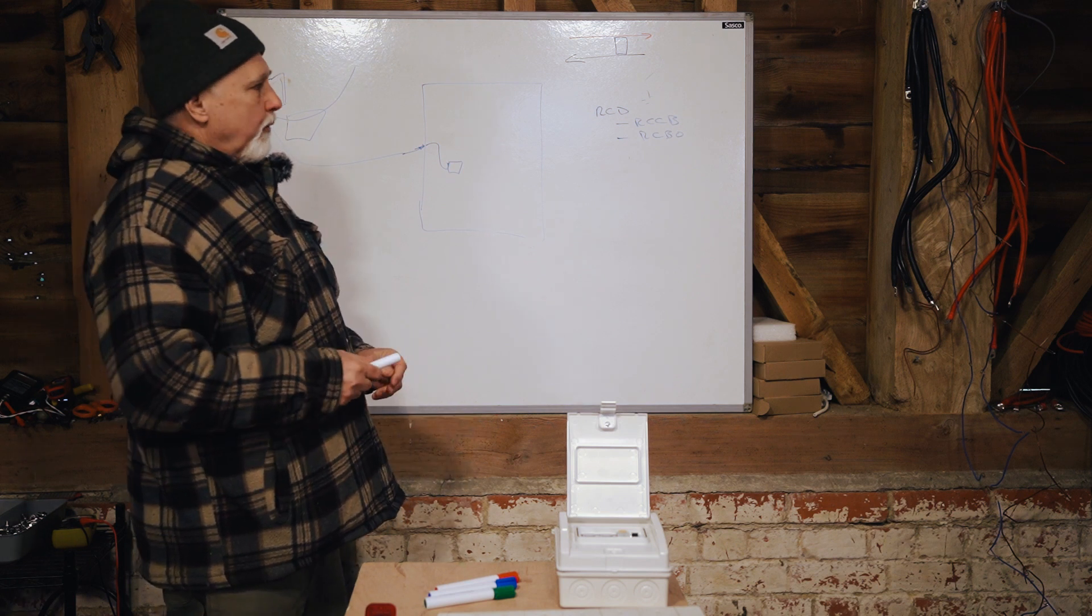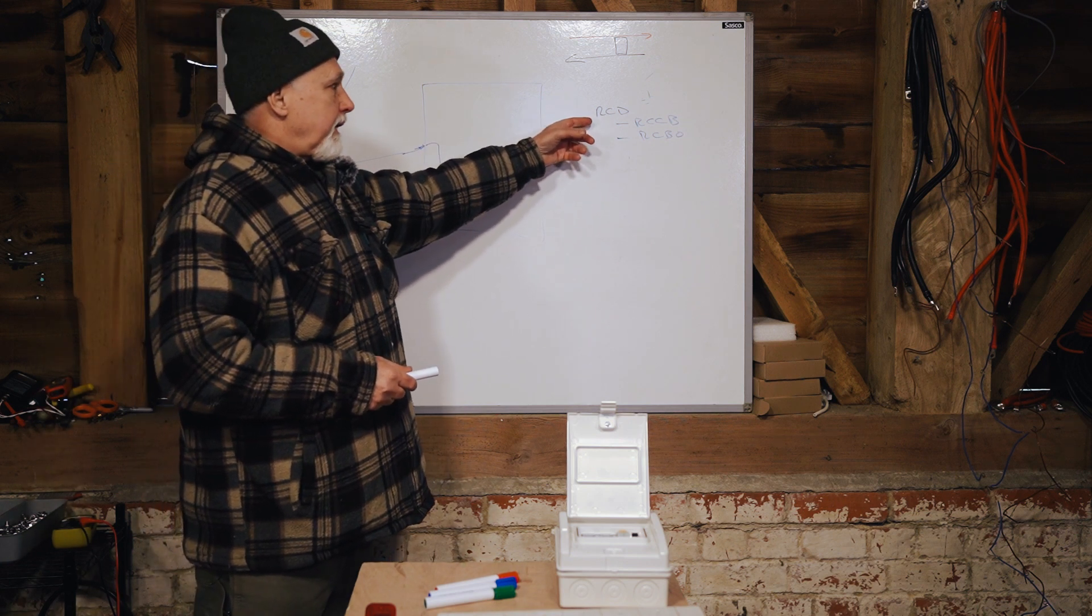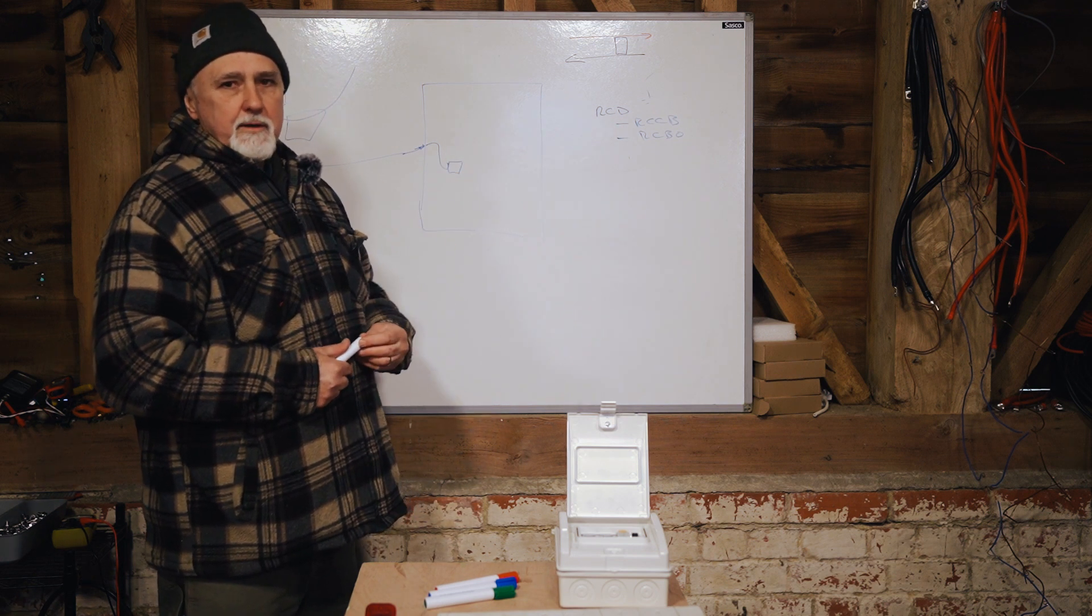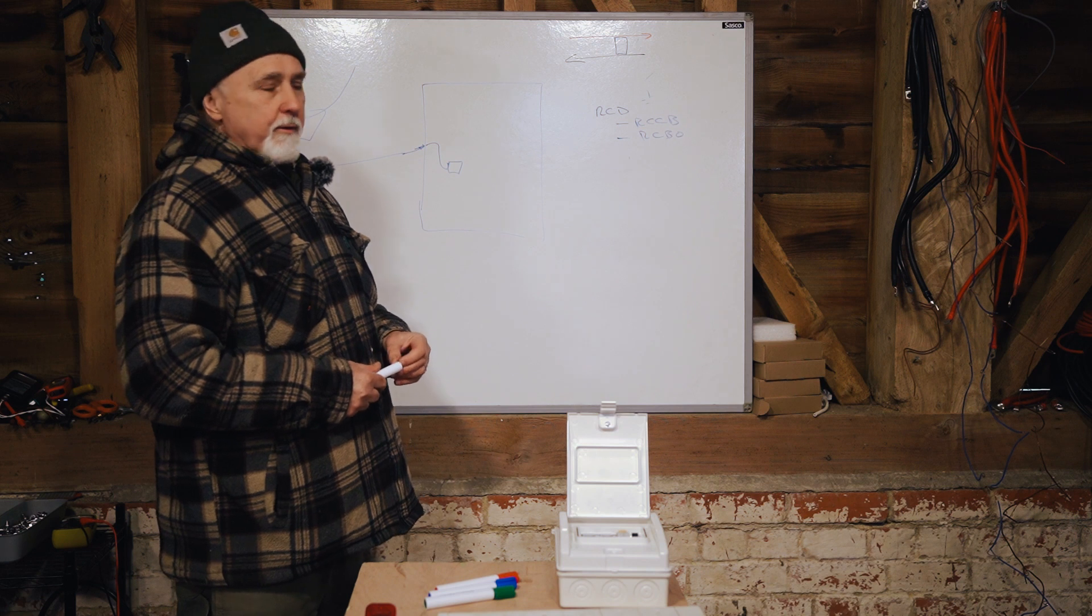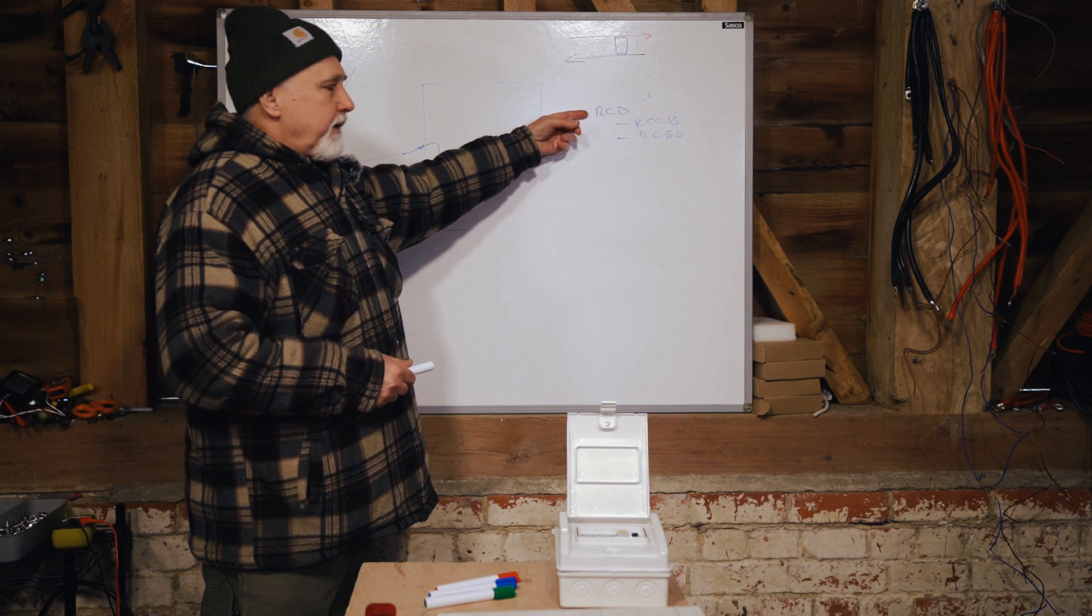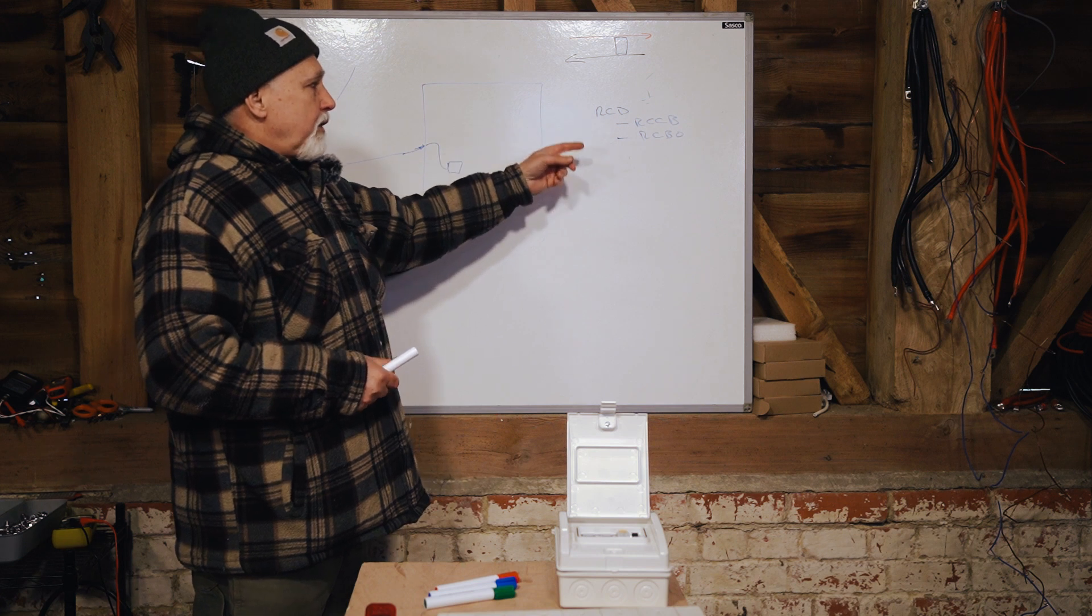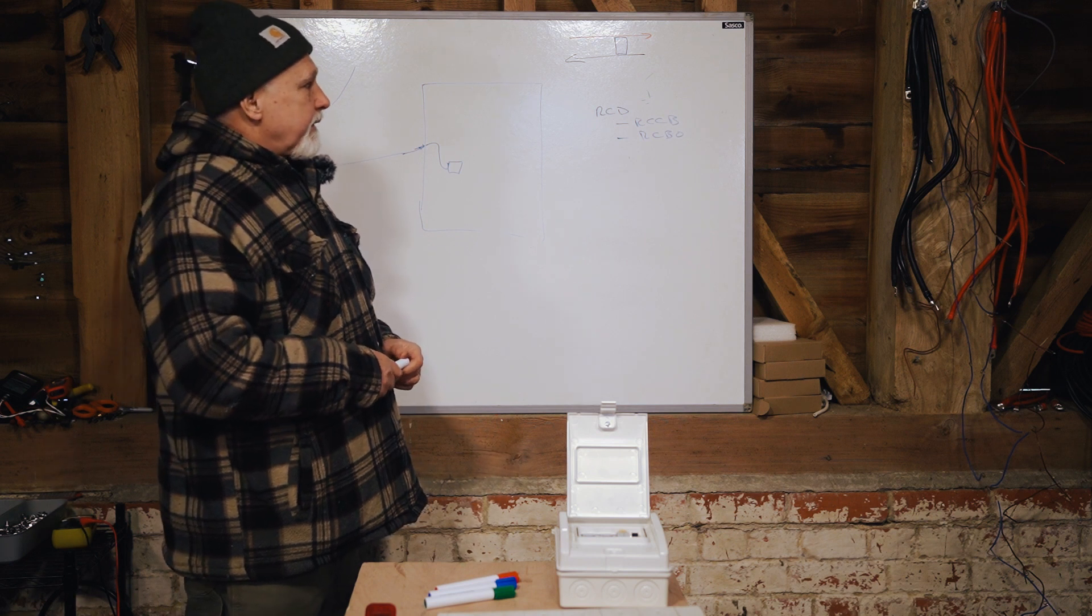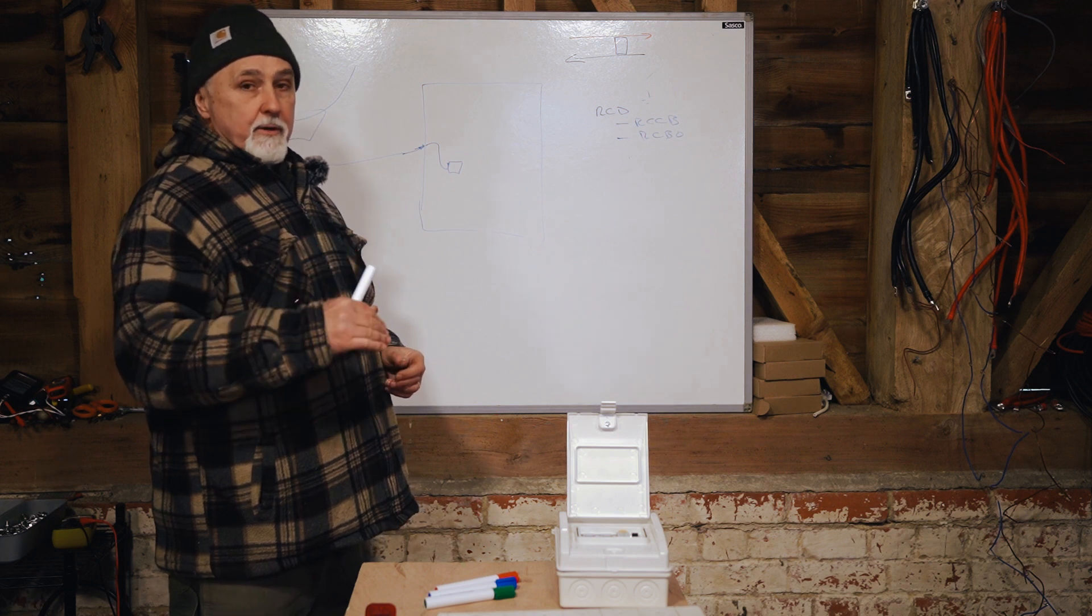But there is another school of thought that you have one RCCB, the RCD, sorry. And the RCD, although it has a current stipulated on it, it's not going to trip when it reaches that current. It could actually become damaged when it reaches that current. So the whole idea is that you have the RCD that can carry as much current as you need for the installation and then use multiple circuit breakers, so MCBs or circuit breakers, that have the current stipulated for the use of that particular circuit in your vehicle.